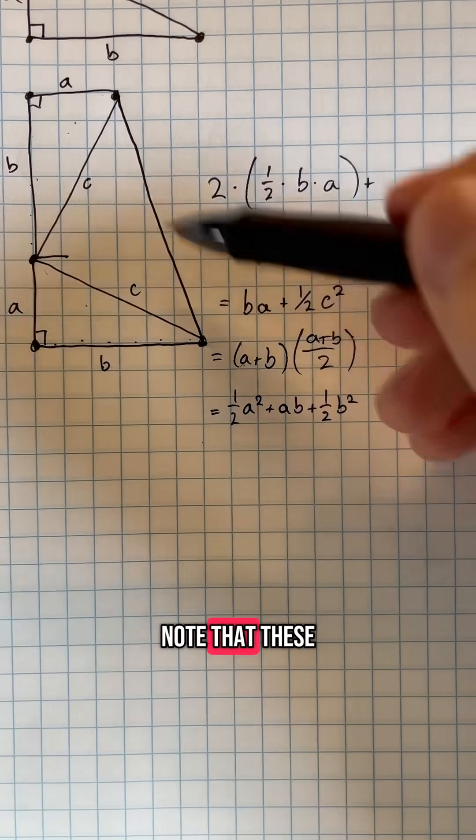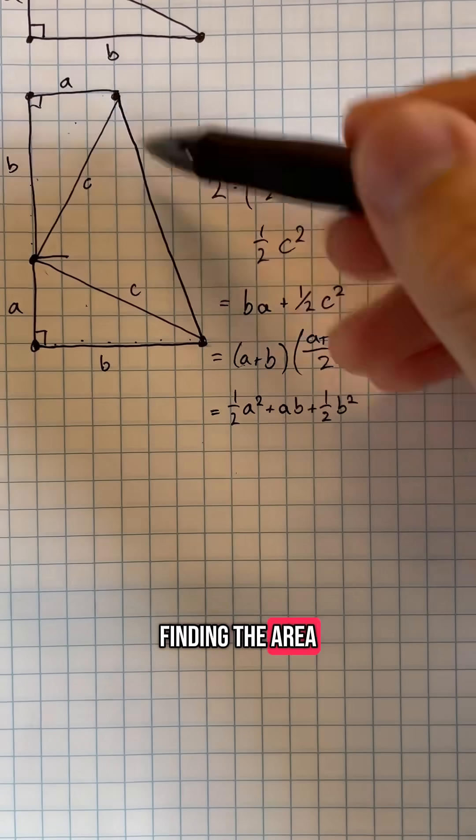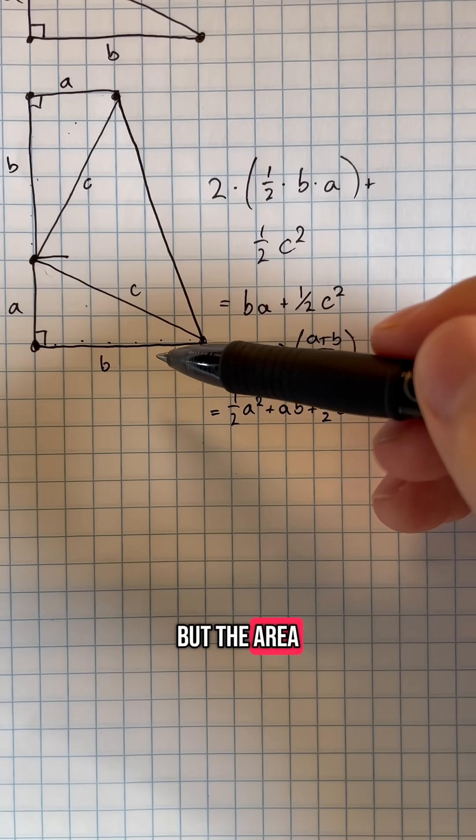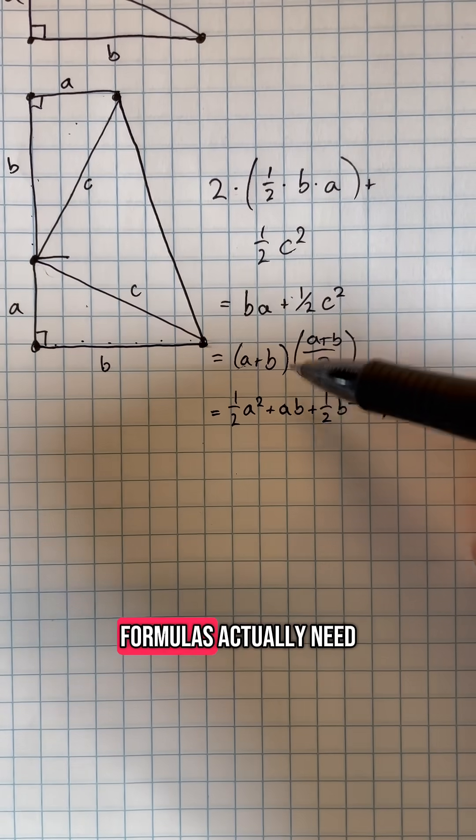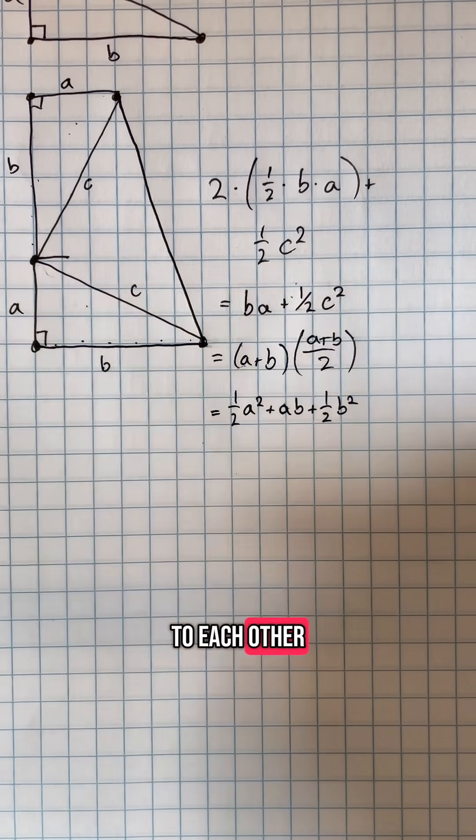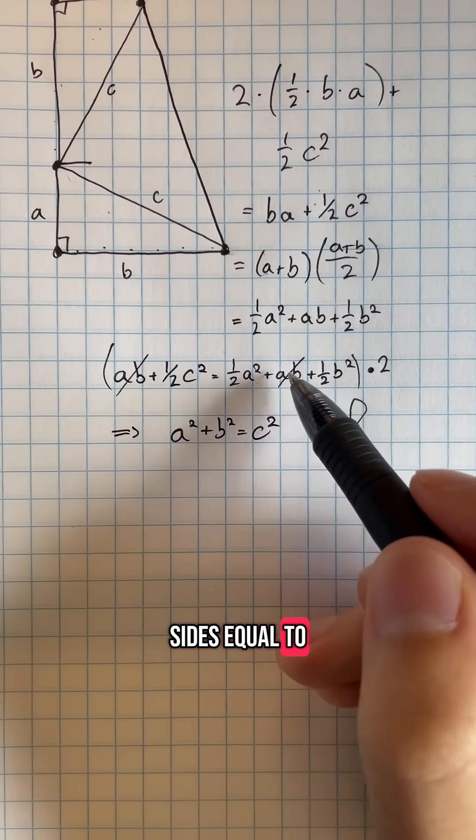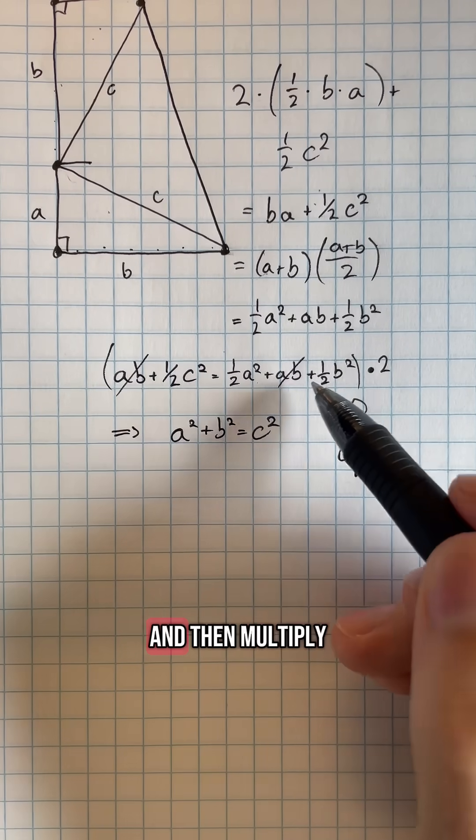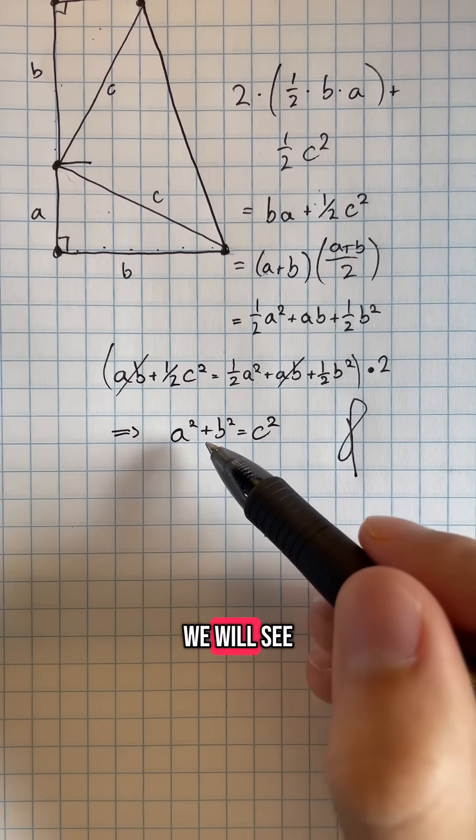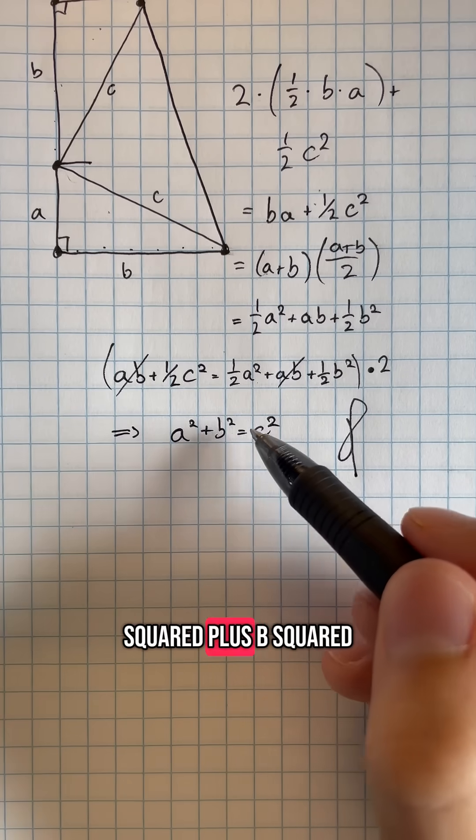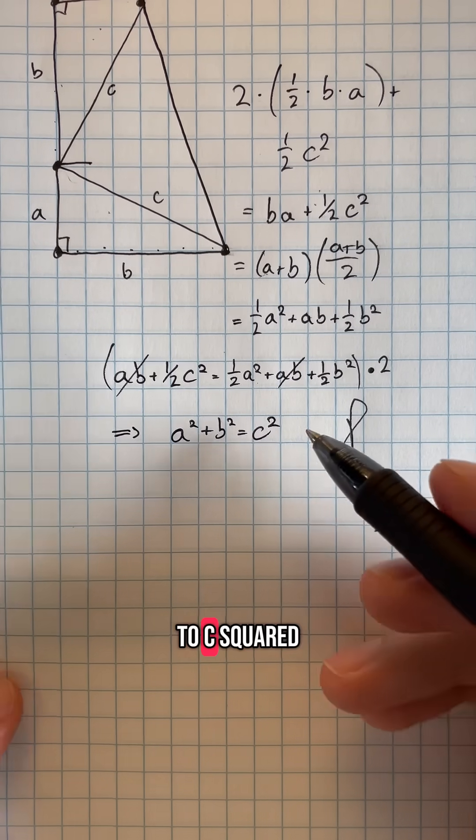But note that these were just two different ways of finding the area of this shape, but the area should just be the area. So these two formulas actually need to be equal to each other. And if we set these two sides equal to each other, cancel out these ab terms, and then multiply both sides by two, we will see that this shows us that a² + b² must be equal to c².